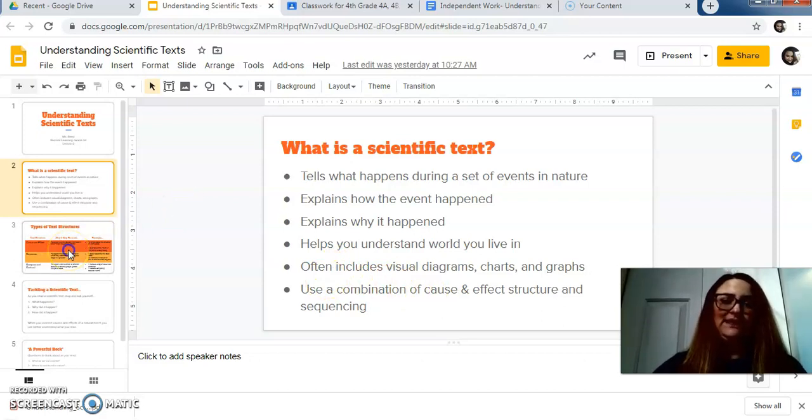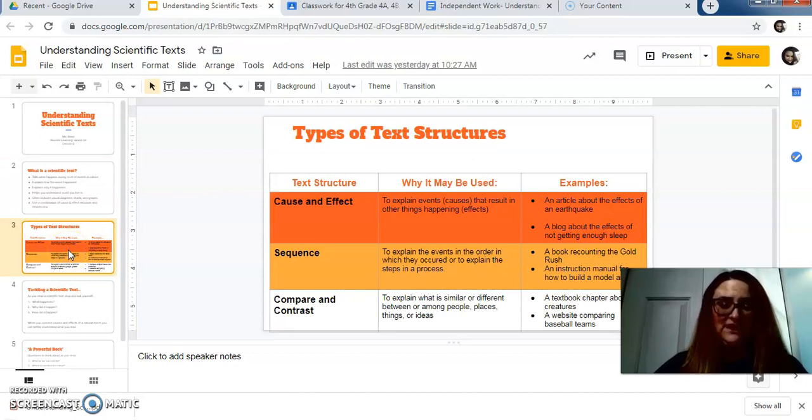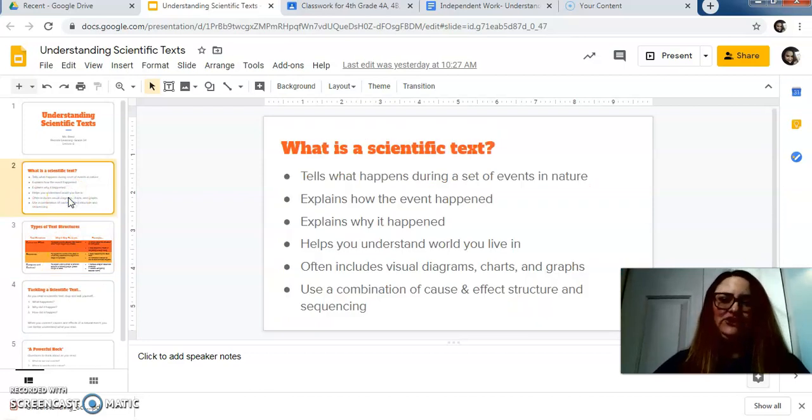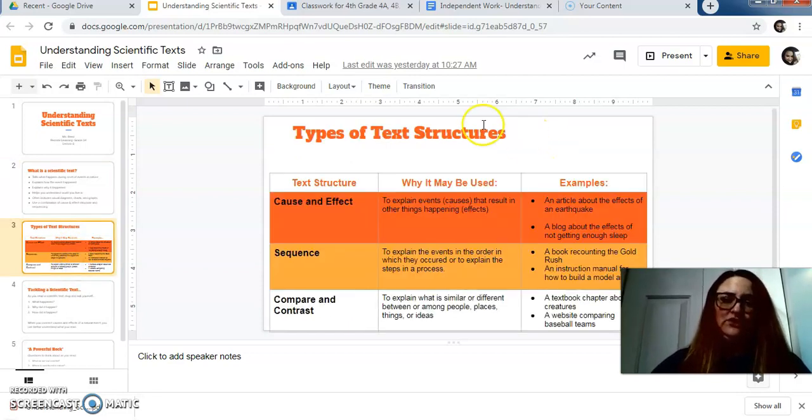So with scientific text, it's a little bit different from a technical text, which we've been talking about. A technical text is trying to explain to you a procedure to follow, something that you need to do in the order. Whereas a scientific text is trying to explain to you something that has happened in nature, the order in which it happened, but also what caused something to happen. So when we're doing text structure for a scientific text, we're going to be paying close attention to cause and effect and also sequencing, because it's going to be a combination of both.